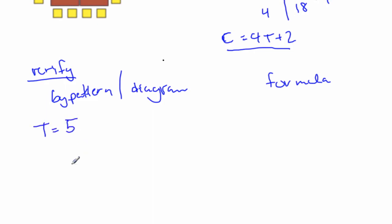Right. So let's try t equal to 5. So by my diagrams, if I make five tables, one, two, three, four, five tables, I have all these people, chairs around the table.